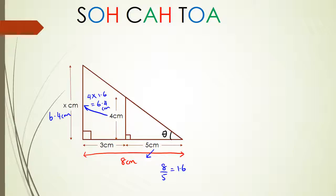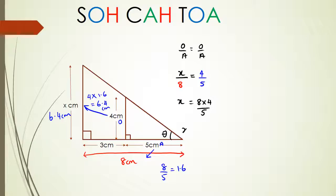The other way of doing it would be to write it like this: opposite over adjacent equals opposite over adjacent. So we've got x, which is the unknown, divided by 8, and that equals — for the little triangle — opposite as 4, adjacent as 5, so 4 over 5. So then we could write this as x equals 8 times 4 divided by 5, and x equals 6.4 centimeters.